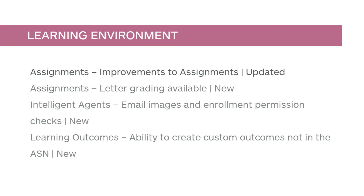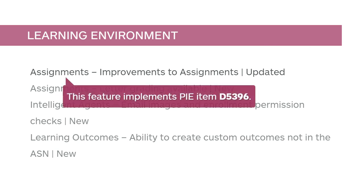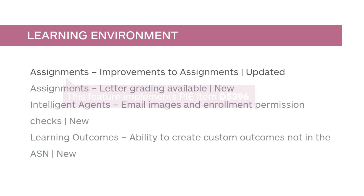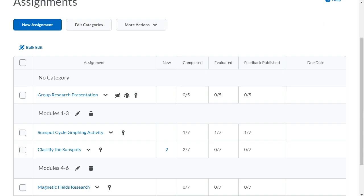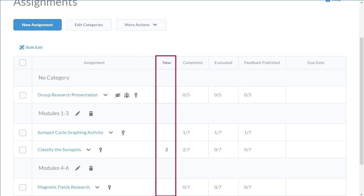Assignments includes a new column that highlights the number of new submissions or resubmissions. This new column will now identify new and resubmitted assignments. This feature implements PI Item D5396.